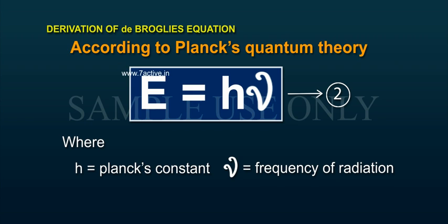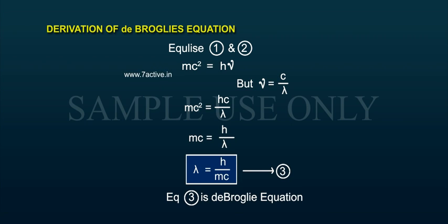Nu is frequency of radiation. Equalize 1 and 2: mc squared is equal to h nu. But nu is equal to c by lambda, so mc squared is equal to hc by lambda. Cancel c on both sides.